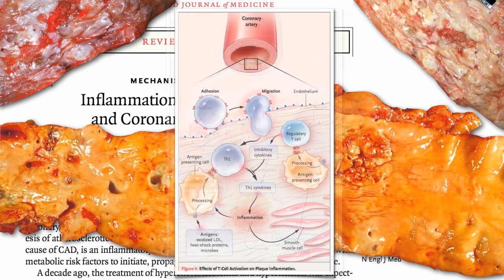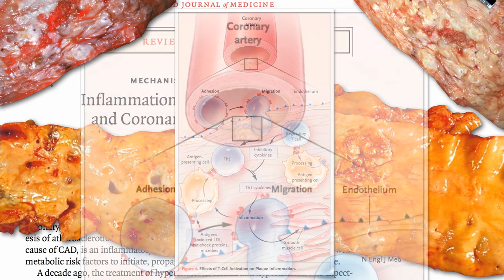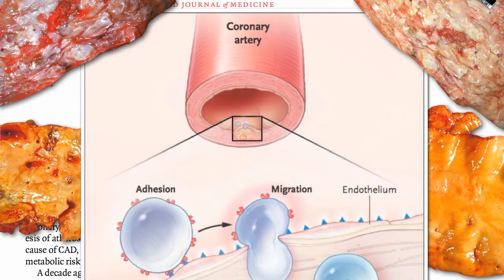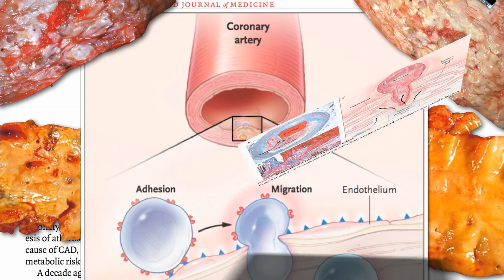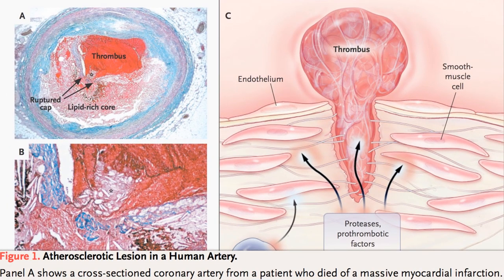Other inflammatory cells are called into action, and it gets pussier and more inflamed, and turns into a big whitehead sticking out like a zit into the blood flow inside our arteries. The blood's pulsating past and can rip off the cap, and you get a big squirt of pus straight into your artery.